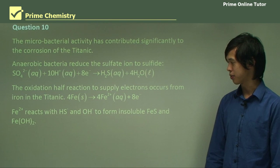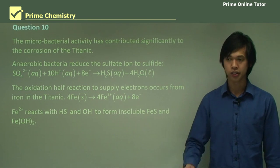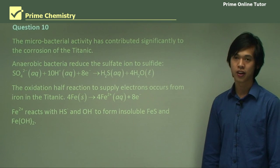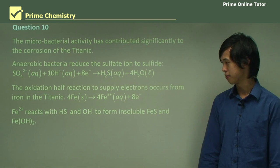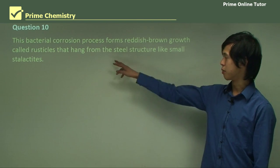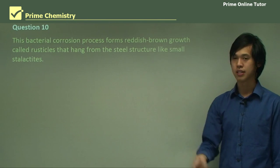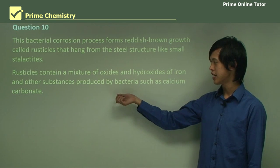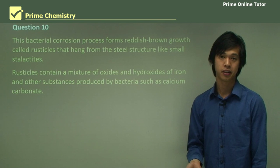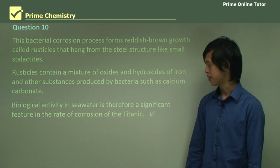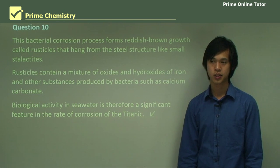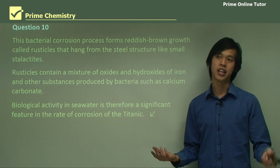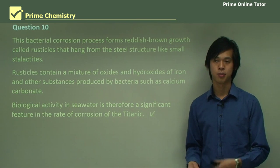Those Fe²⁺ ions react with HS⁻, S²⁻, and OH⁻ to form insoluble compounds such as FeS and Fe(OH)₂ — it can bond with lots of these chemicals and become very insoluble. This bacterial corrosion process forms reddish-brown growths called rusticles that hang from the steel structure like stalactites. They contain a mixture of oxides and hydroxides of iron and other substances produced by bacteria, such as calcium carbonate. The biological activity in seawater is therefore a significant feature in the rate of corrosion of the Titanic.